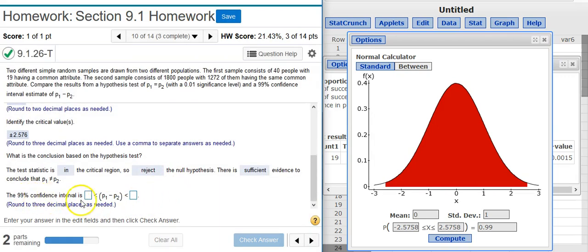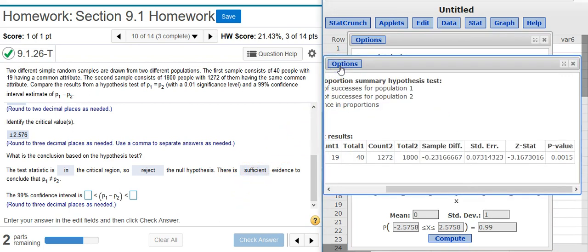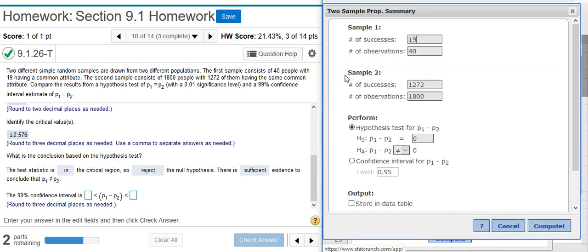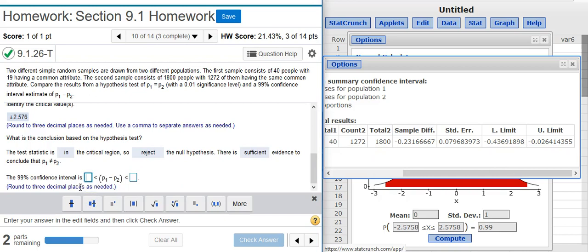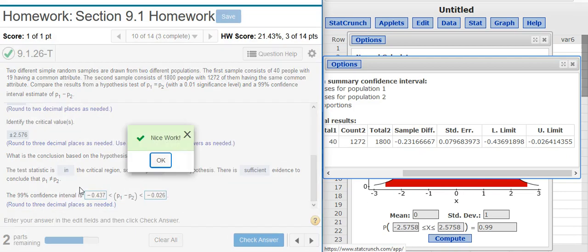Now the next part asks for a 99% confidence interval. We could go through the menu options again, but I'm a little lazy, so I'm just going to go back here to this previous window that we had, click on the options button, and in the drop-down menu, select Edit. That takes me back to the options window, where all I do is select the radio button for confidence interval, make sure my level is at the right level, and hit Compute. Et voila! The lower and upper limits for my confidence interval, which I can stick here in my answer field. I'm asked to round to three decimal places. Nice work!